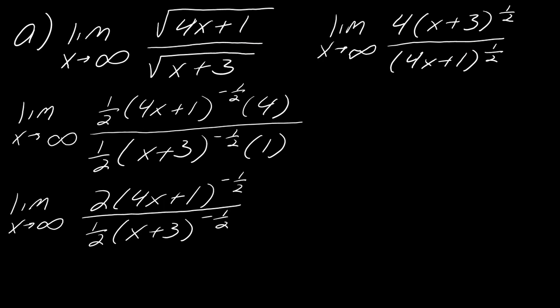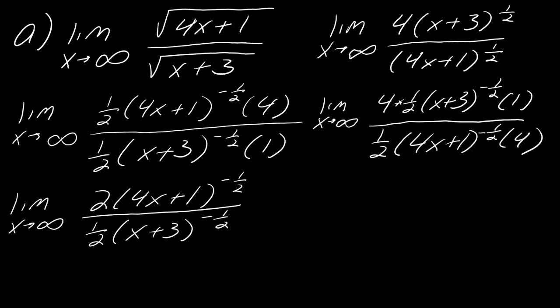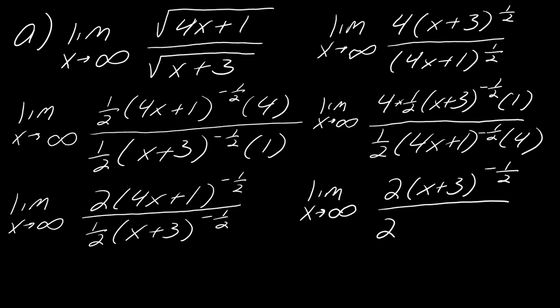So what we're going to do is take another derivative. And now you can see this looks very similar to the last situation that we just had. If I simplify all of this, this is going to look so much like where we just started. This will ultimately become 4 times 2x plus 3 to the negative one-half, over 2 times 4x plus 1 to the negative one-half. What's going to end up happening when I simplify this is I'm really back to square one. So you can see, just from taking the derivative twice, that this thing is just going to cycle forever.